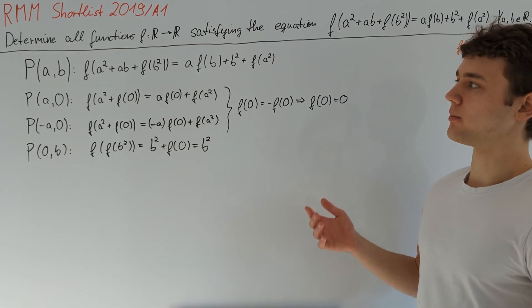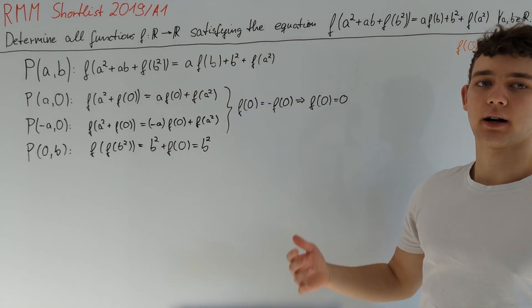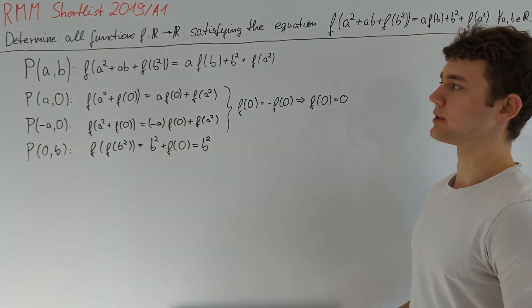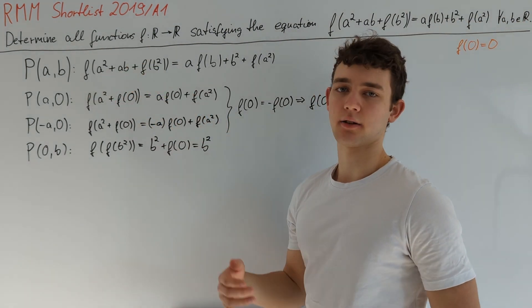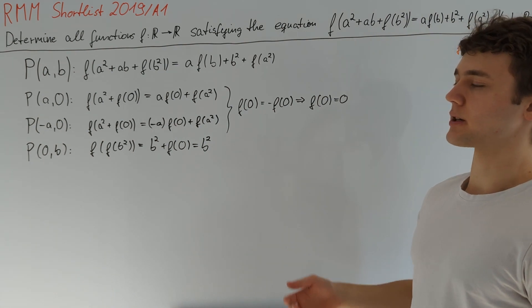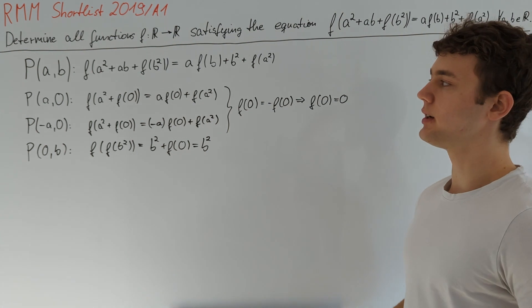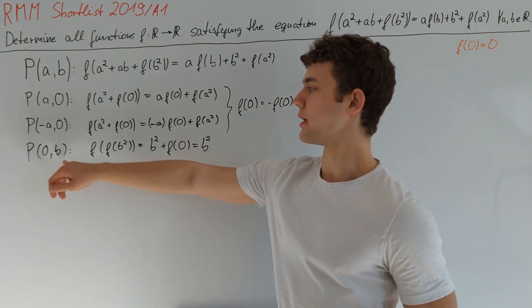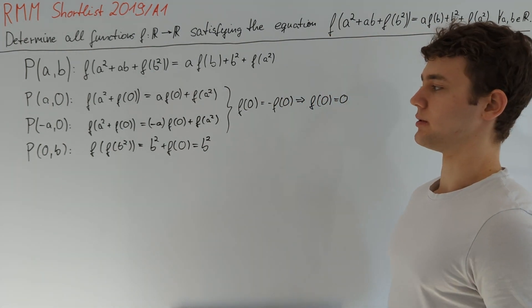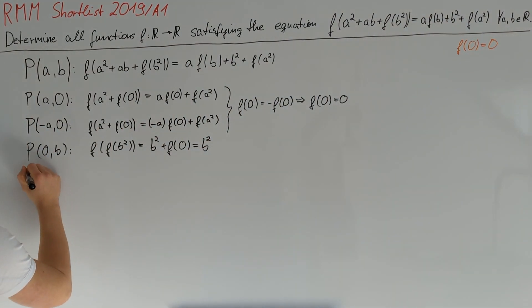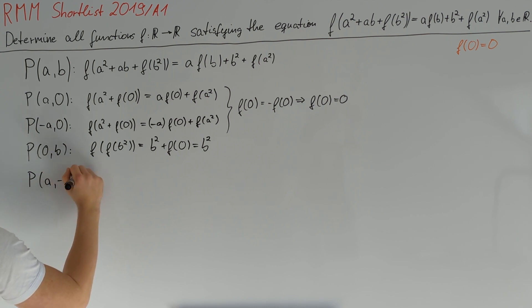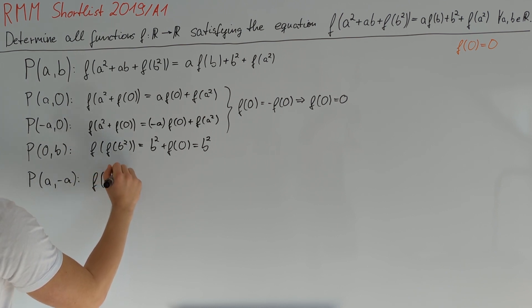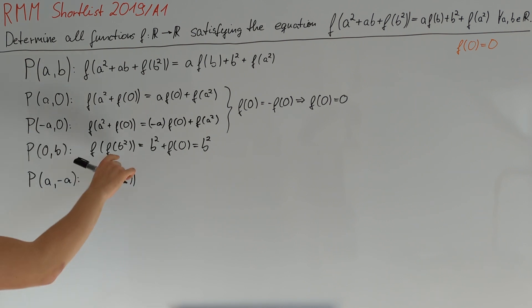Let's now look more specifically at P(a, b) and try further tricks. Another strategy is to simplify functional arguments. On the left side we have three summands inside f: a² + ab = a(a+b). To set this to 0, either a = 0 (already done) or a + b = 0. So let's examine P(a, −a). We'll get a term f(f(a²)) on the left side, which we already know how to handle.